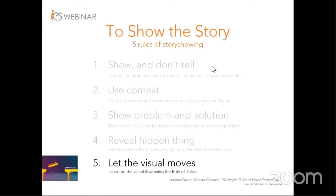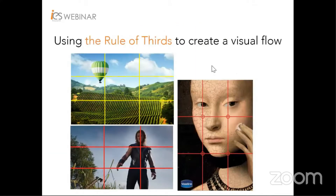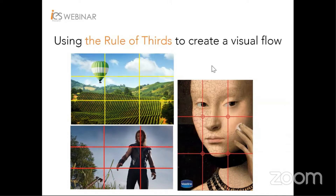Number five: let the visual move. Definitely, a static visual cannot move, but we can use the rule of thirds to create a visual flow, making the pictures come alive. The rule of thirds is a guideline to imagine breaking an image down into thirds, both horizontally and vertically, so that we have nine parts within. It is commonly used in design, paintings, photographs, and films. If you place points of interest at the intersections or along the lines, the visual will become more balanced and enable a viewer to interact with it more naturally. Studies have shown that when viewing images, people's eyes usually go to one of the intersection points most naturally rather than the center of the shot.